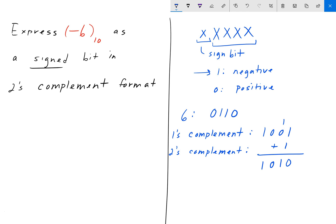And so, to express negative 6 as a two's complement format, we would just add the one's sign bit, the negative sign bit here. So, negative 6 is equal to the sign bit 1, plus the two's complement format 1, 0, 1, 0.